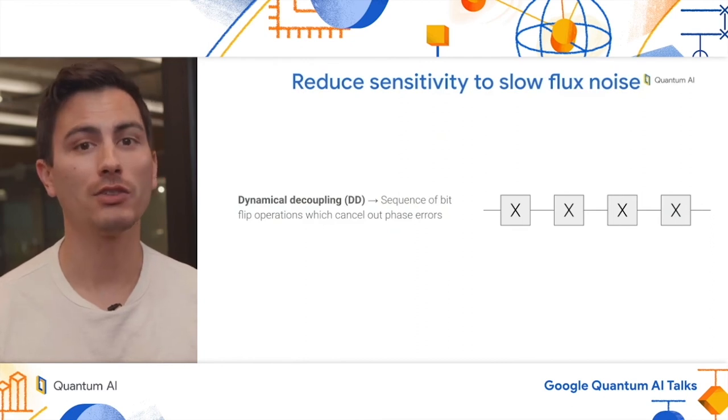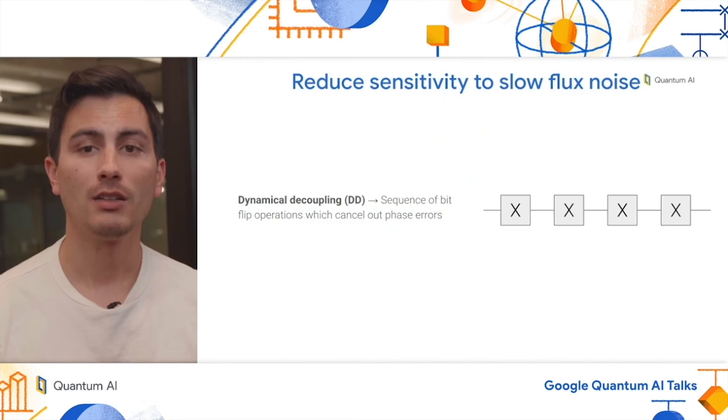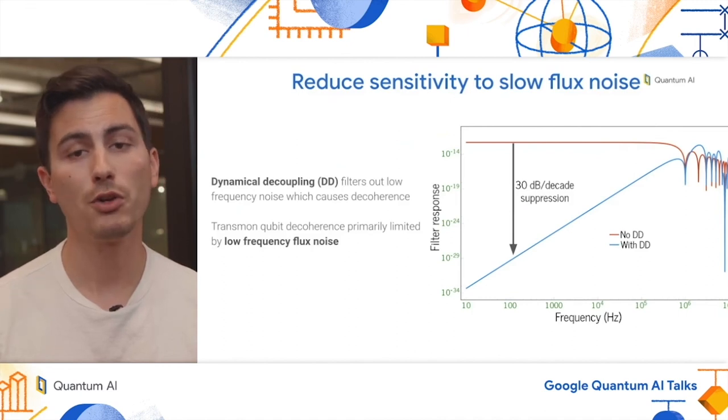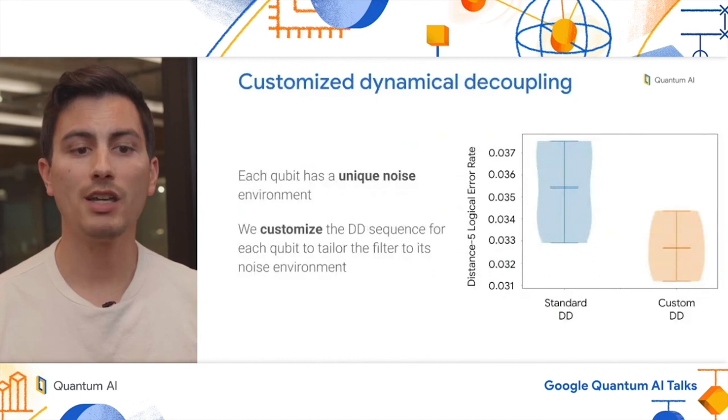Finally, we wanted to reduce our sensitivity to slow flux noise, and to do that we use dynamical decoupling, or DD. Dynamical decoupling is a sequence of bit flip operations which cancel out phase errors. An example of DD is shown here on the right hand side of your slide. The effect of DD is actually to filter out low frequency noise which causes decoherence. So this is shown pictorially on the graph on the right hand side of your screen. When we don't do any dynamical decoupling, represented by the red curve, we see that the qubit response is fairly flat over low frequencies. Now when we introduce dynamical decoupling, we see a large suppression of low frequency noise. In particular for this four pulse sequence shown on the previous slide, we see a 30 dB per decade suppression of frequency noise from a few hundred kilohertz down to DC. Finally, we made a very key observation that each qubit has a unique noise environment. So what we end up doing is customizing the DD sequence for each qubit to tailor the filter to its unique noise environment. And when we do this, we see a significant reduction in the logical error rate for a distance five qubit, as shown on the right hand side.